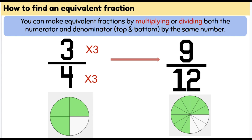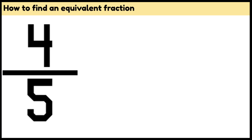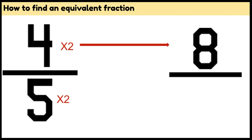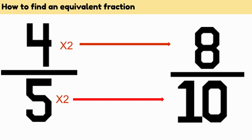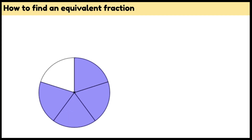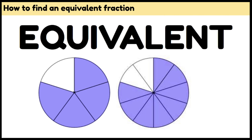So our new equivalent fraction is nine over twelve, or nine twelfths. You can see in the picture the same area is shaded. Now we have four fifths. We're going to multiply by two — both the bottom and the top. Four times two gives us eight and five times two gives us ten. Our equivalent fraction is eight tenths. You can see four fifths and eight tenths have the same amount shaded, so they are equivalent and are worth the same amount.